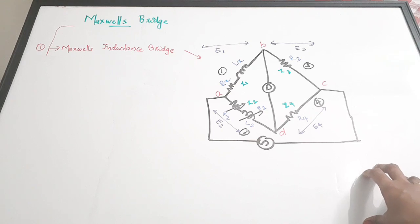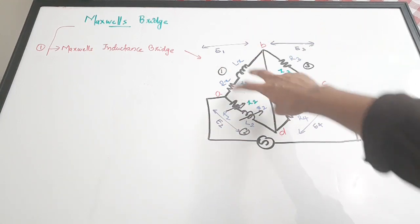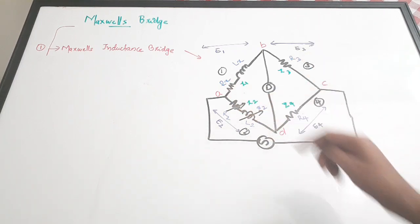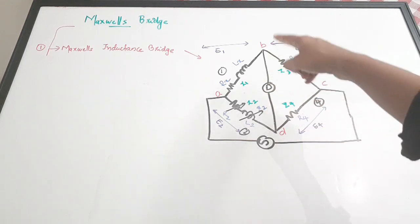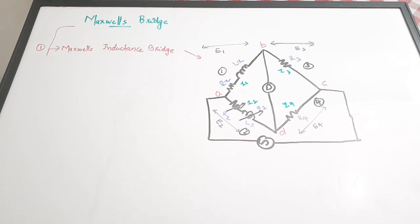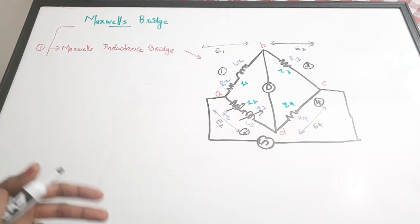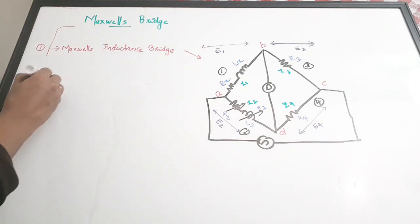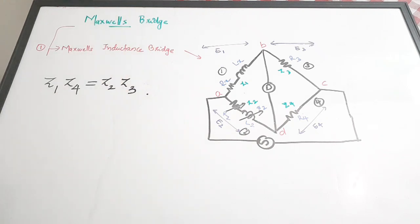These are the four arms, out of which one arm is unknown. All other arms have known components, and one of those arms has variable components which we vary to achieve null deflection — zero current through the detector branch — thus balancing the bridge. The bridge balancing equation, same as for the Wheatstone bridge, is Z1 × Z4 = Z2 × Z3.